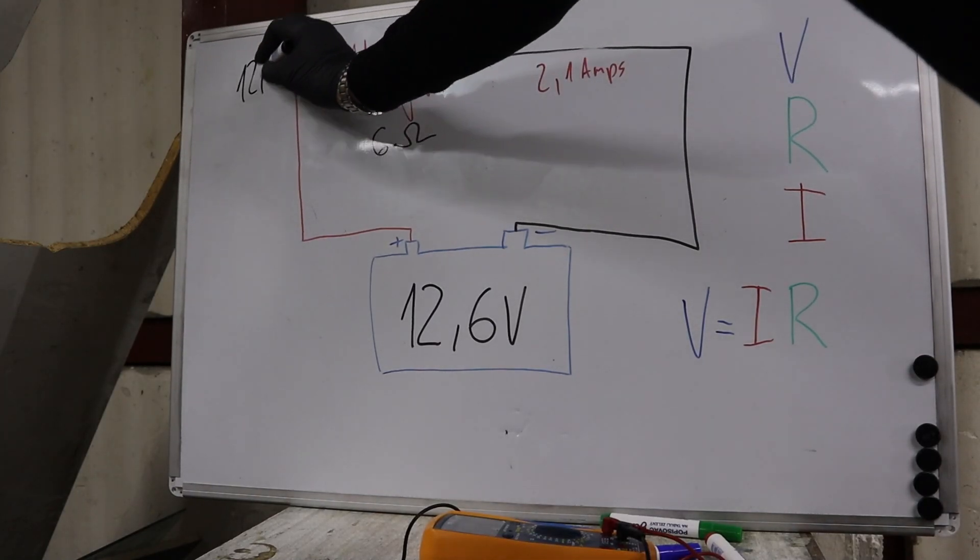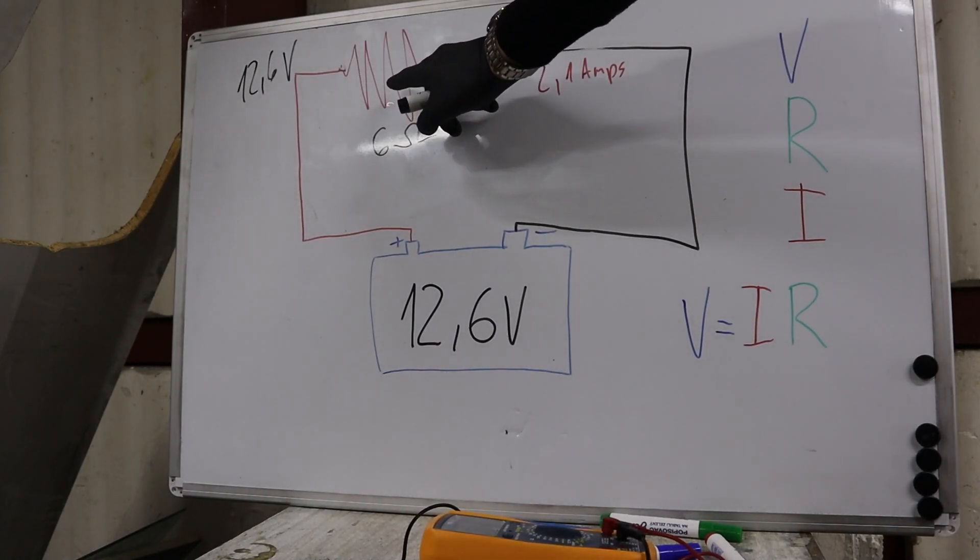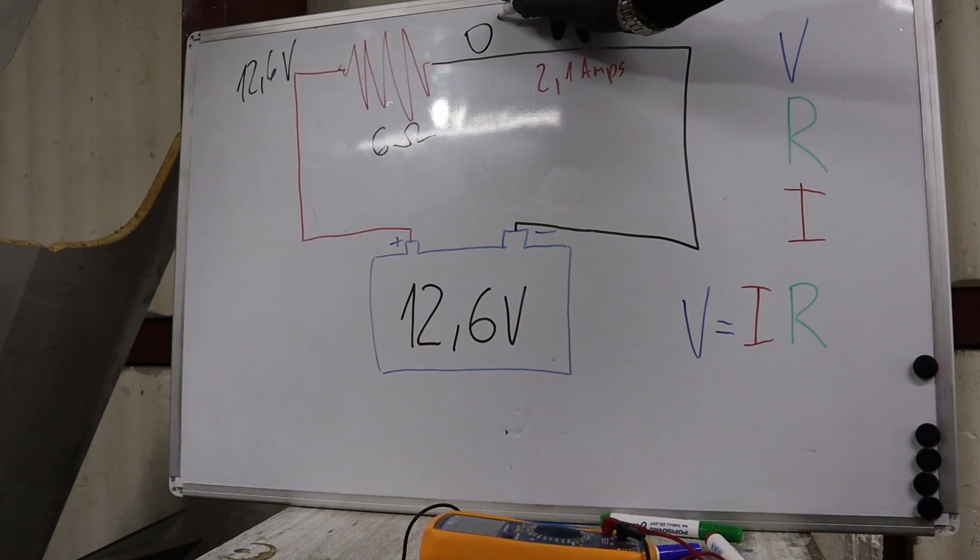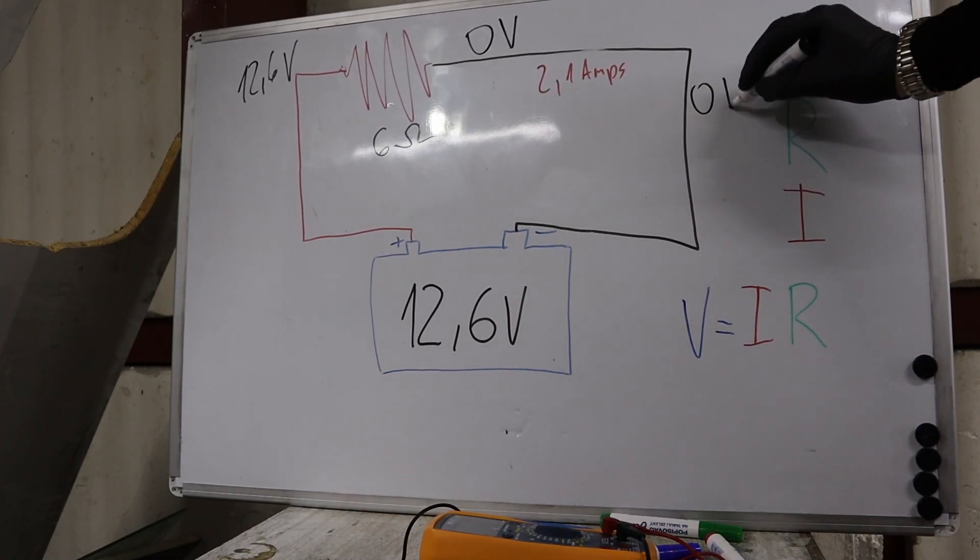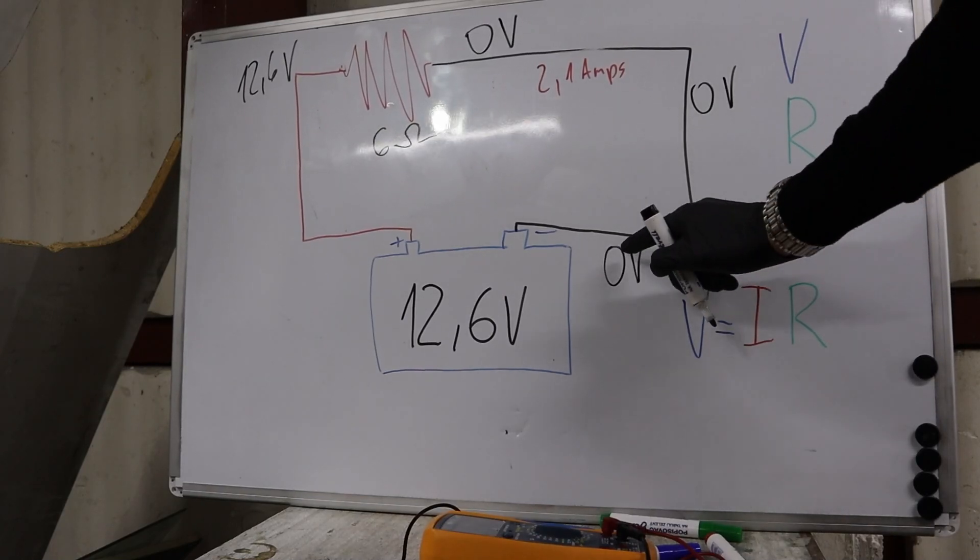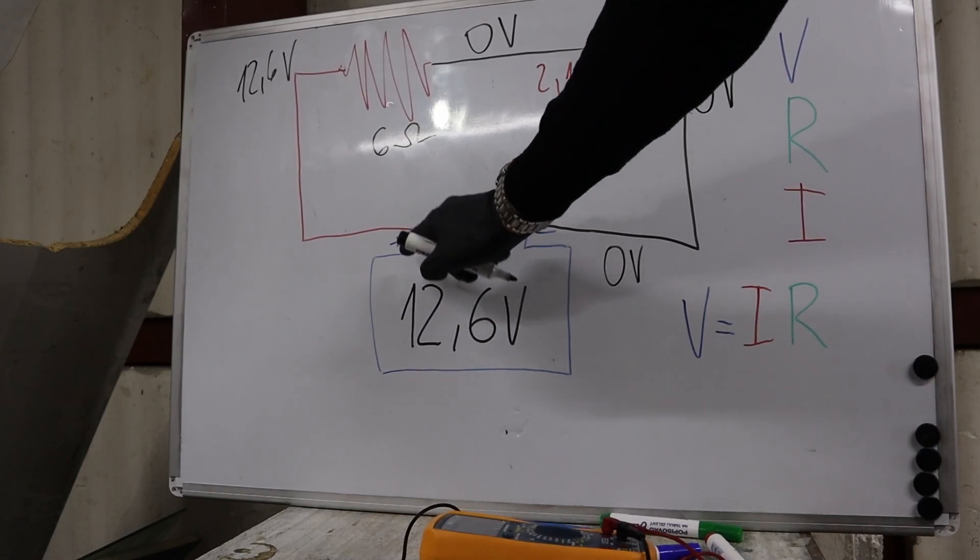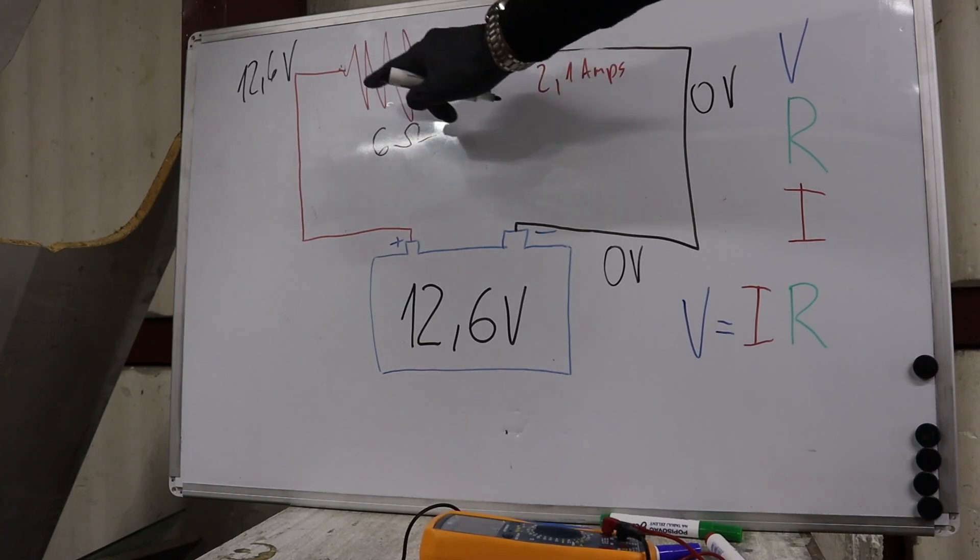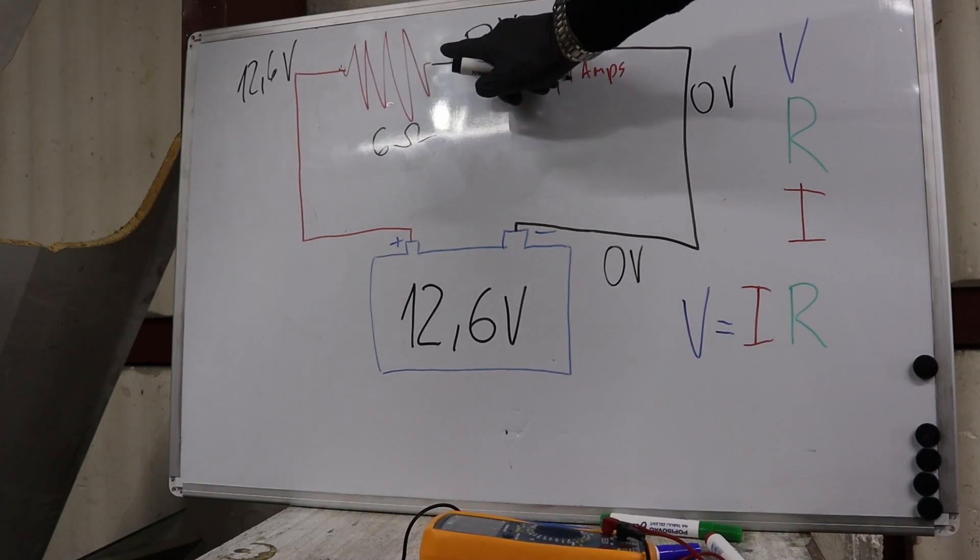Voltage is starting at 12.6V and we have 12.6V until we get to our resistor. We have 12.6V here, but this resistor will eat up all the voltage. After the resistor, we have 0 volts. 0 volts here, 0 volts here, 0 volts here. Once we start from the positive side again, we have 12.6V until we get to the resistor. The resistor eats up all the voltage and then it's 0.